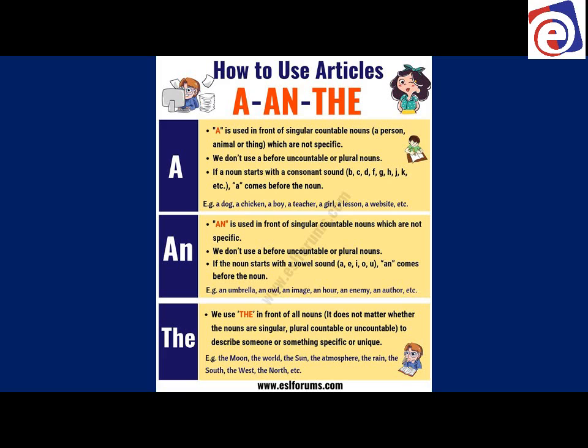Here's a short lesson on how to use what we call the articles: a, an, and the. Sometimes a student will confuse when to use a and the, or a and an. Let's look at the chart. 'A' is used in front of a single countable noun — a person, place, or thing. A noun is a person, place, thing, or idea which are not specific. We don't use 'a' before uncountable or plural nouns.